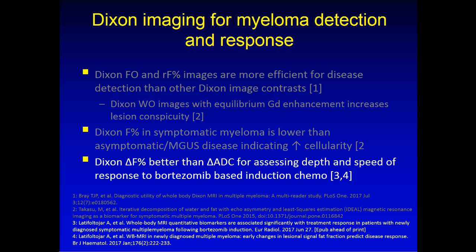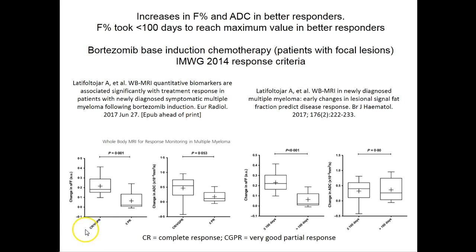Dixon fat fraction images can also be used to assess the depth and speed of response to a chemotherapy regimen, and may be better than changes in ADC with diffusion imaging. The change in fat fraction after two cycles of induction chemotherapy shows that patients with a complete response or very good partial response have an increase in fat fraction, whereas patients with less than a partial response show no change in their fat fraction.